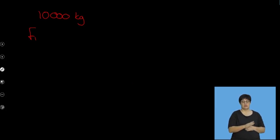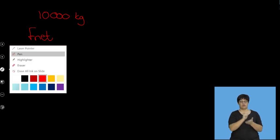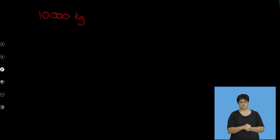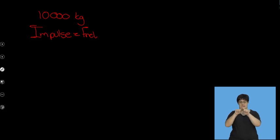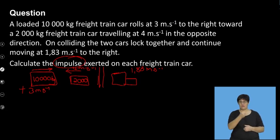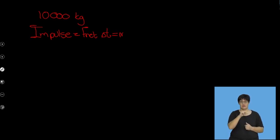Looking at the 10,000-kilogram car: we want impulse, which is F net delta T. But they didn't give me delta T yet, so I can't use impulse as it stands. What I can do is remember that impulse also equals M delta V — the second part of the equation. So for the 10,000-kilogram truck: final velocity was 1.83, initial velocity was 3.